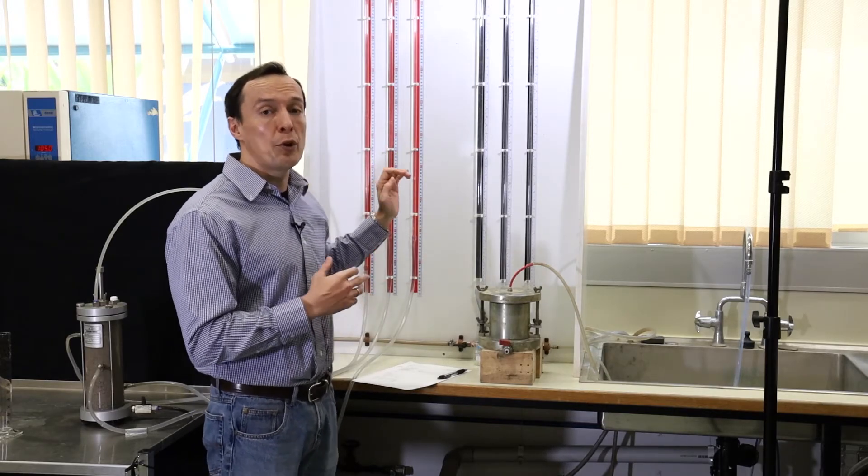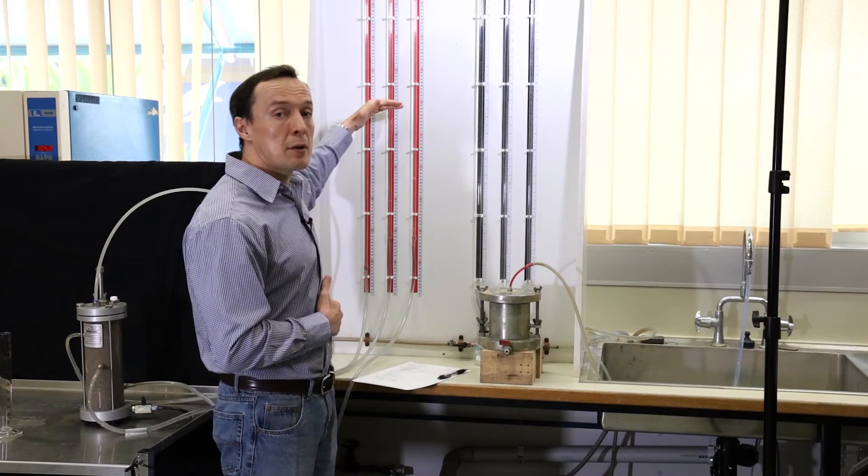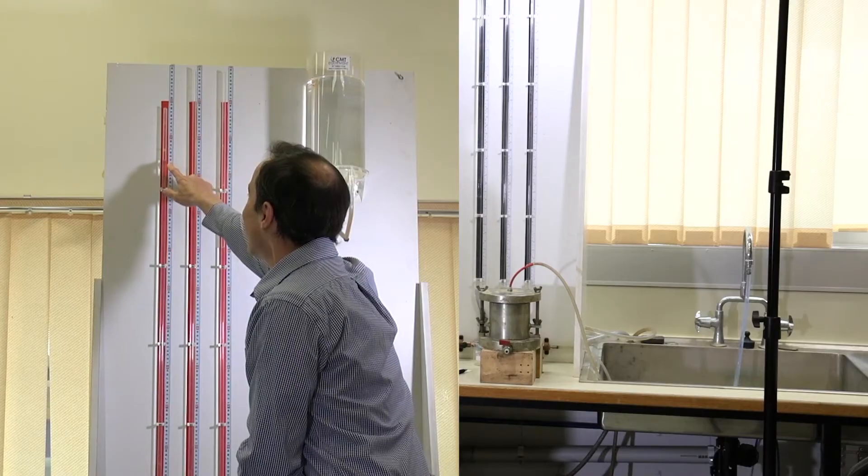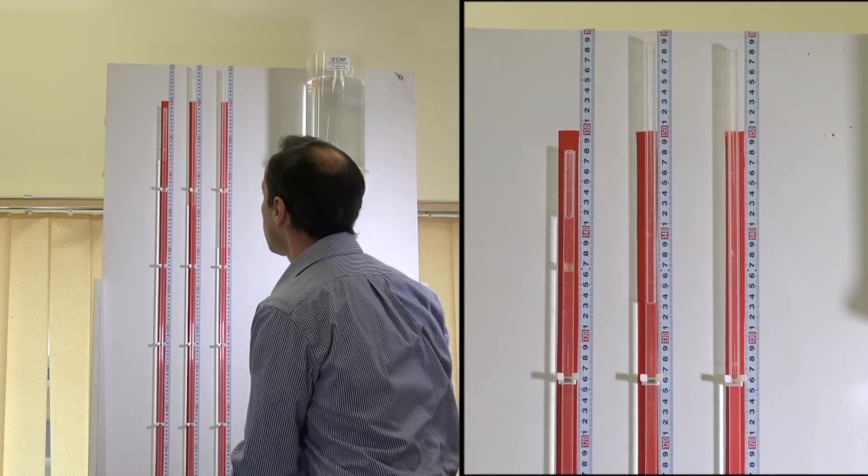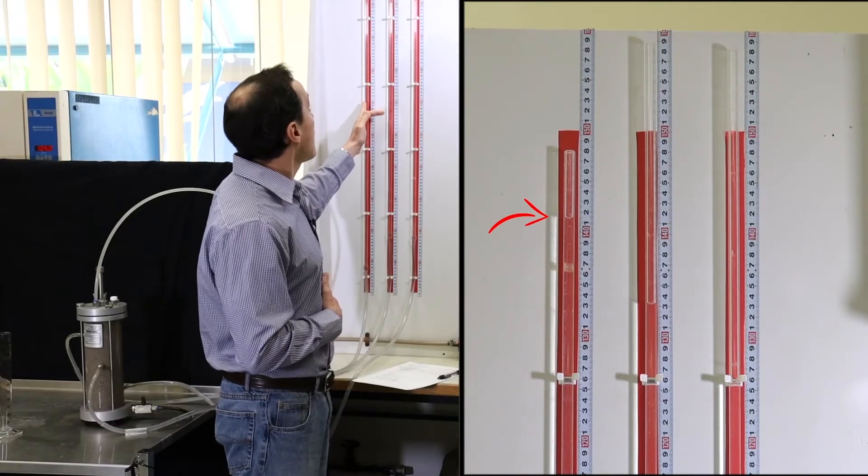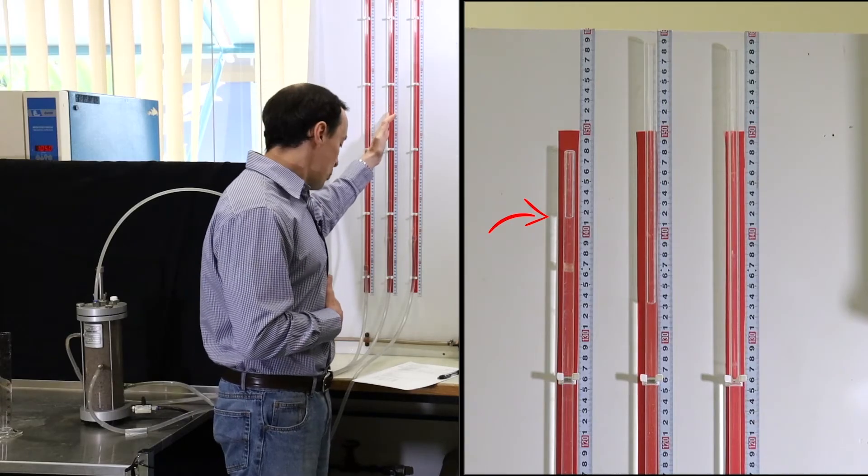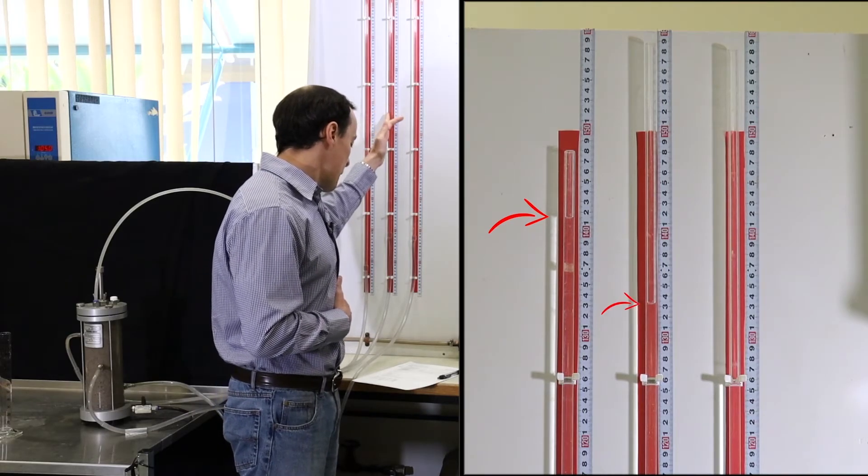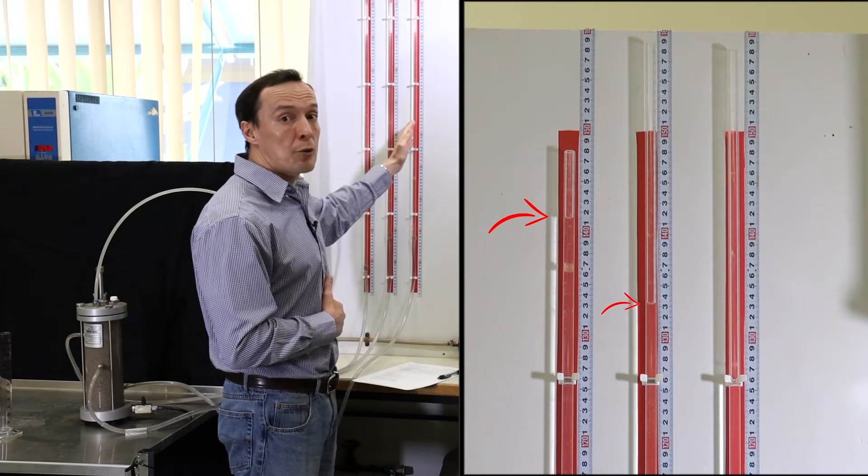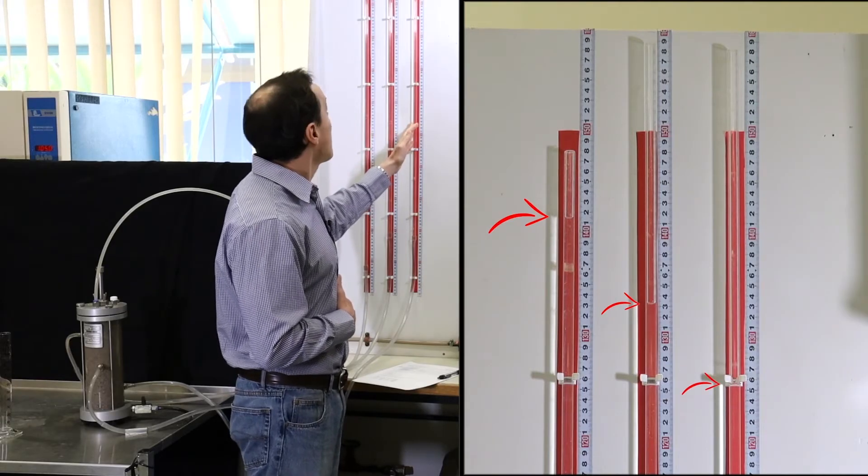During each test we need to measure the water level or head of water in these manometers. The one on the left hand side which is connected to the top part of the sample gives us a reading of 1,411 millimeters. The one in the middle gives a reading of 1,328 millimeters and the manometer on the right hand side has a reading of 1,252 millimeters.